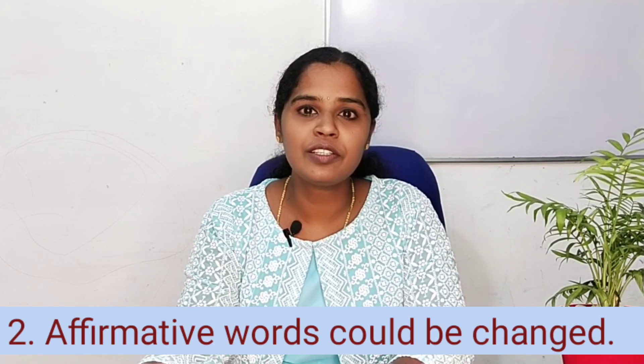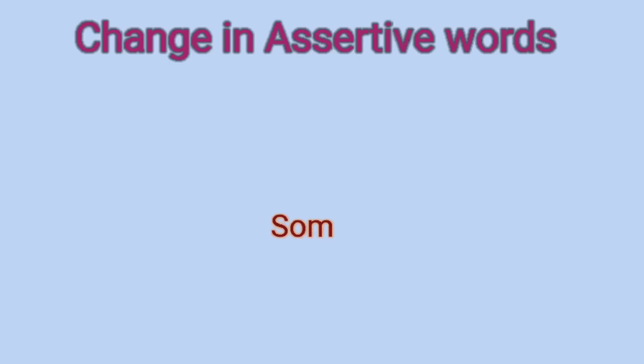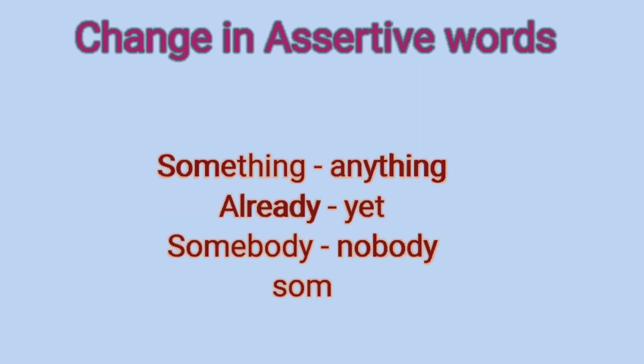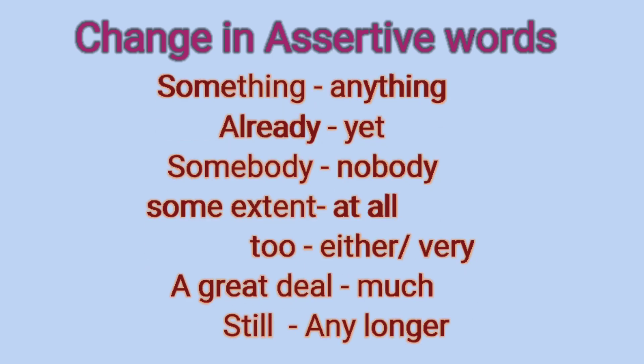There are some affirmative words that need to be changed when we are making negatives. See some of these words: 'something' should be changed to 'anything'; 'already' should be changed to 'yet'; 'somebody' to 'nobody'; 'some extent' to 'at all'; 'too' can become 'either' or 'very'; 'a great deal' becomes 'much'; and 'still' becomes 'any longer'. These assertive words must be changed when we use negatives.